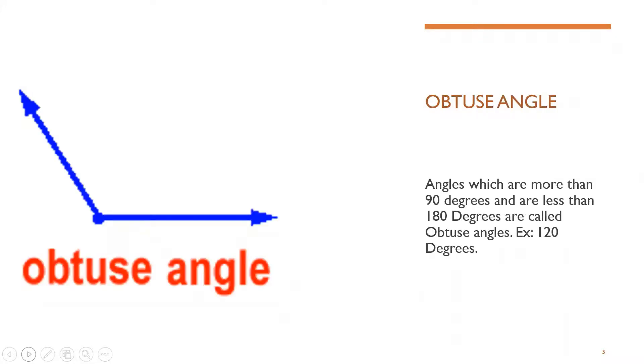Obtuse angle. Angles which are more than 90 degrees and are less than 180 degrees are called as obtuse angle. Example 120 degrees. They can be 150 degrees, 145 degrees, 130 degrees etc.